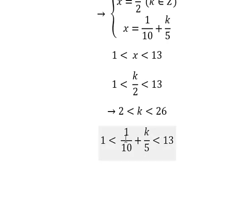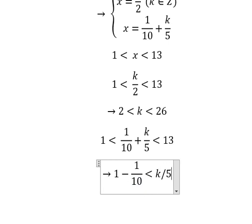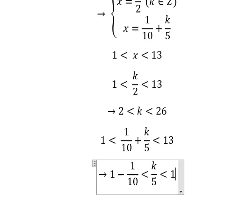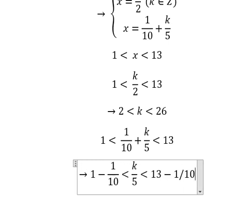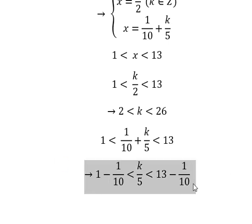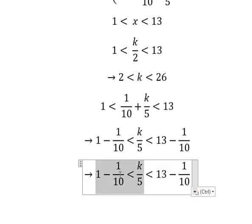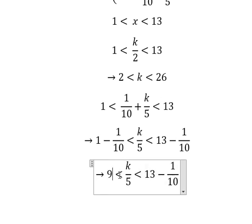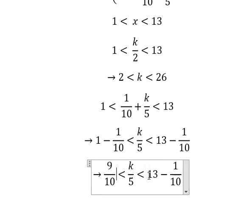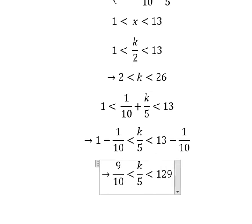We minus 1 over 10 for both sides, so that should be like this. This one is about 9 over 10. This one is about 129 over 10.